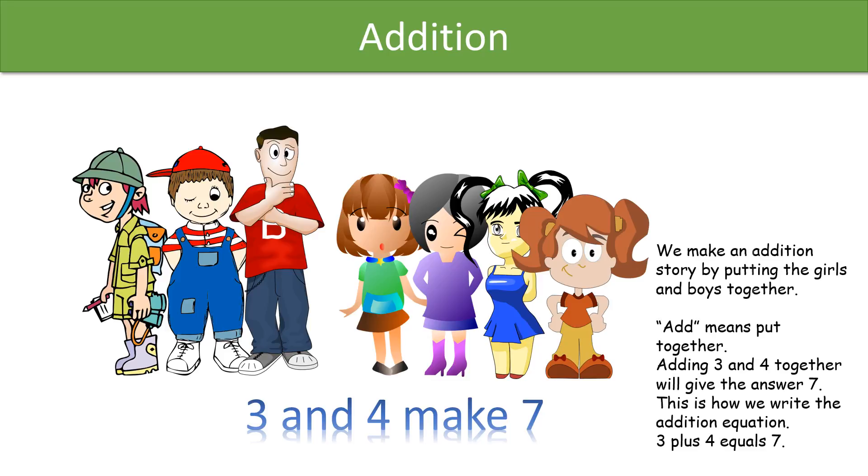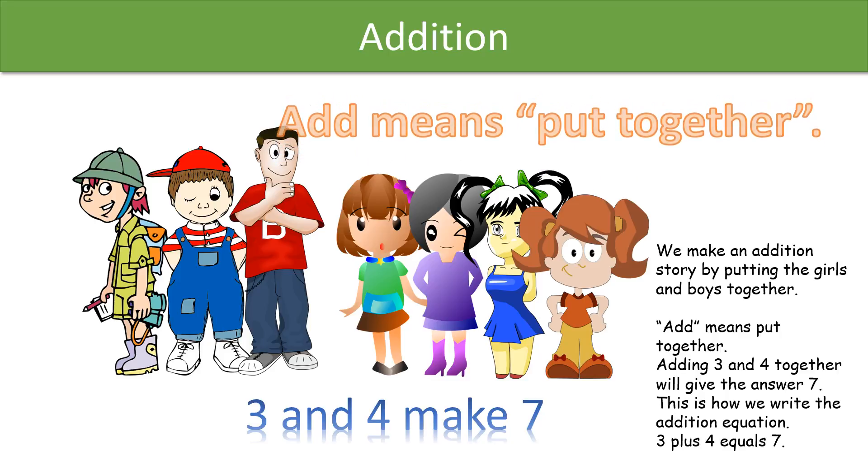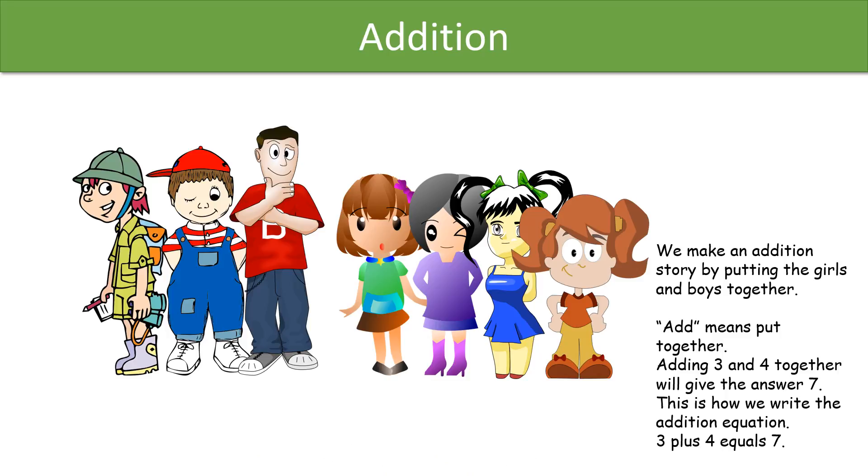We make an addition story by putting the girls and boys together. Add means put together. Adding 3 and 4 together will give the answer 7. This is how we write the addition equation. 3 plus 4 equals 7.